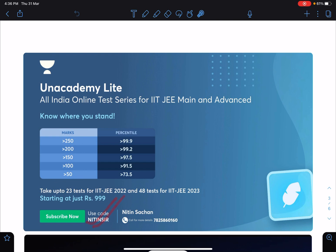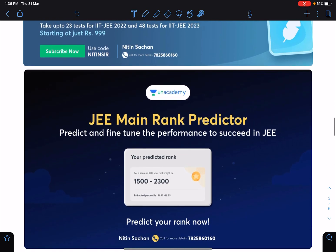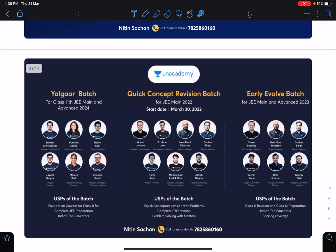You have a JEE Main rank predictor also based on your score. You can get the very accurate idea of your expected rank. These are some recently started batches: Yalgaar Batch for 2024 and Quick Concept Revision Batch that is 30th March and Early Evolve Batches also going on that is for JEE Mains and Advanced 2023.